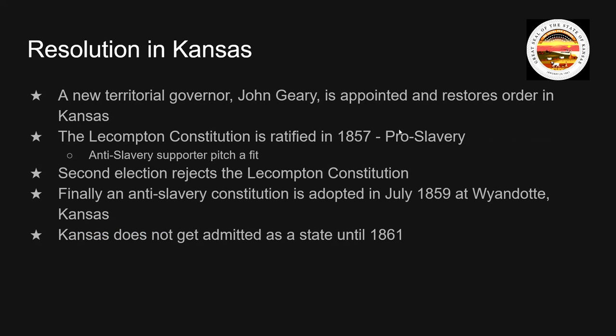Eventually, in September of 1856, there's a new territorial governor named John Geary who is appointed and restores order. By the time order is restored, about 55 to 60 people have been killed due to the violence. Kansas has to draft a constitution. The pro-slavery Lecompton Constitution is written in September of 1857 and ratified in December of 1857. When people vote on it, they're only given two choices: limited amounts of slavery or unlimited amounts of slavery. There is no way to vote for no slavery.